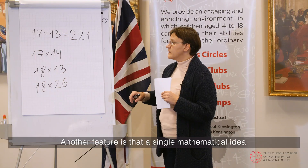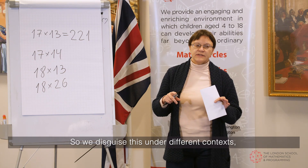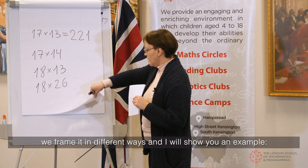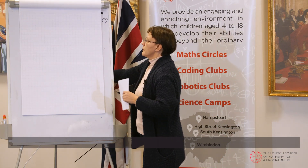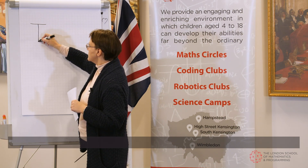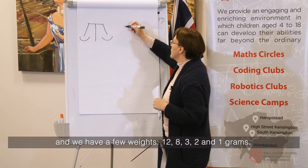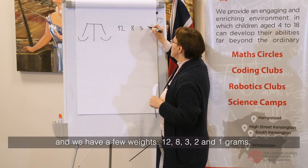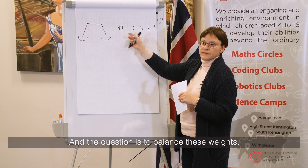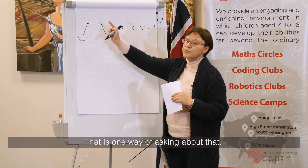Another feature is that a single mathematical idea can be presented to children in a variety of ways. We disguise it under different contexts and frame it in different ways. For example, question one: we have balanced scales with a few weights — something weighing 12, 8, 3, 2, and 1 grams. It could be pebbles, weights, or coins. The question is to balance these weights on the balance scale. Pretty simple arithmetic question. That's one way of asking about it.